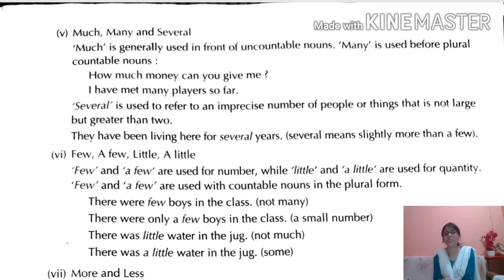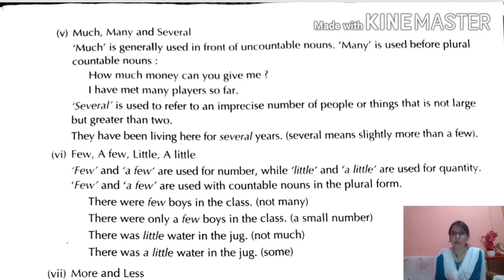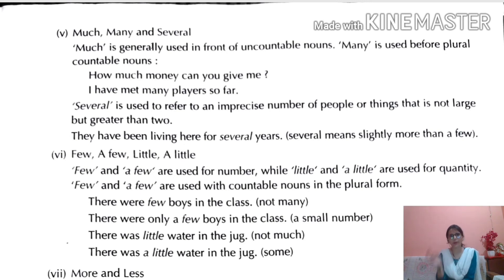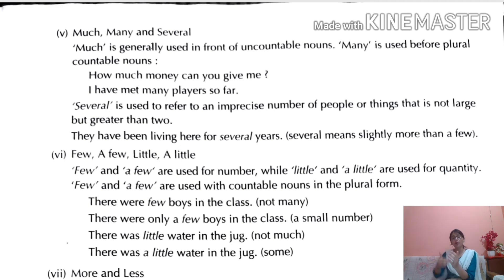'Much' and 'many': 'How much money can you give me?' — money is uncountable, so we use 'much.' 'I have met many players' — players are countable, so we use 'many.' 'Several' is used to refer to an imprecise number of people or things — not large, but greater than two. Example: 'They have been living here for several years' means more than two years.